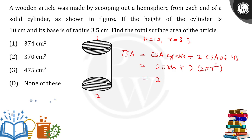You can take 2πR common, so what's left is H plus 2R. Putting in the values: 2 × 22/7 × 3.5 × (10 + 2 × 3.5), which equals 2 × 22/7 × 3.5 × 17.